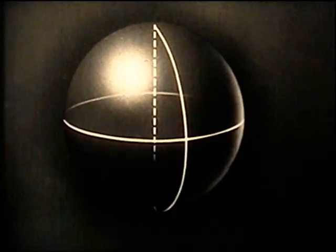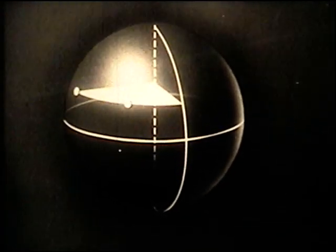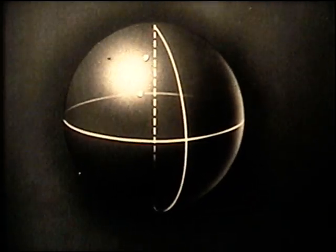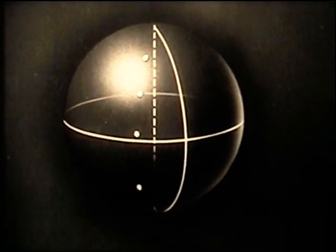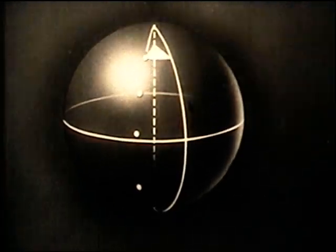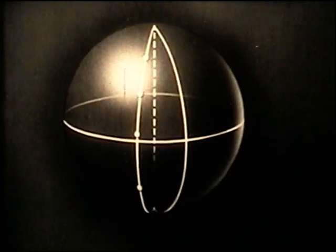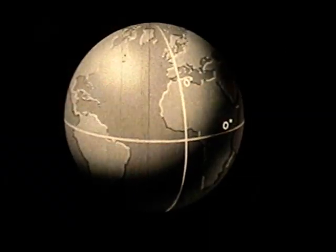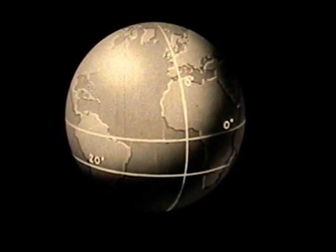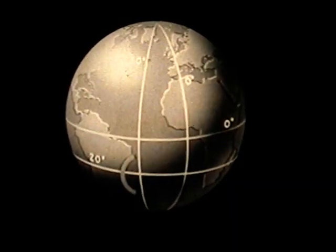Longitude is the angular distance east or west of the Greenwich Meridian. So the ship could be at any of these positions, all of which are 30 degrees west. So she must be somewhere on this line of longitude. There is only one point which is both 20 degrees south and 30 degrees west, where these two lines meet.